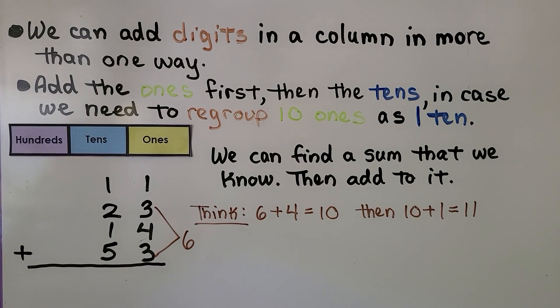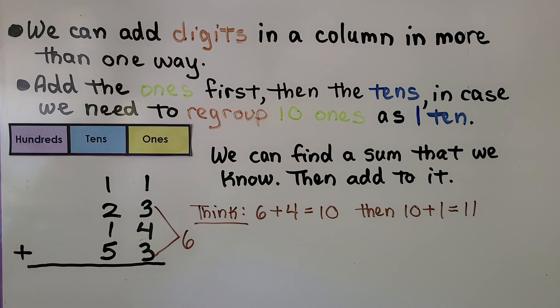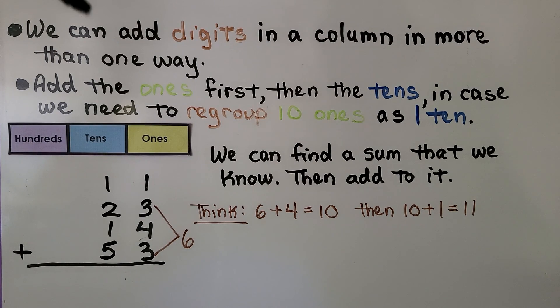We can add digits in a column in more than one way. But we do add the ones first, then the tens, in case we need to regroup 10 ones as 1 ten. We can find a sum that we know, then add to it.